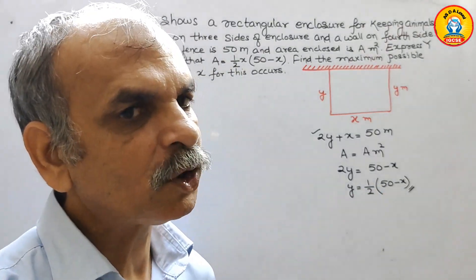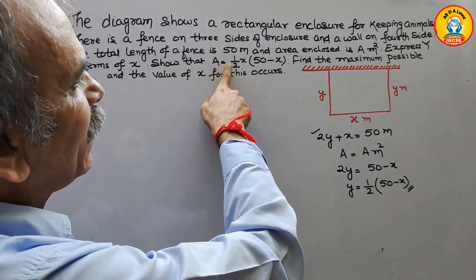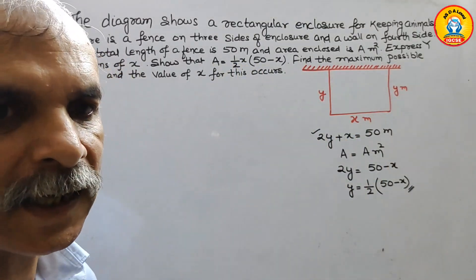So this is your y. Next what they have told? That show that area is half x times 50 minus x.